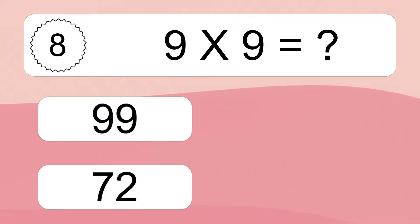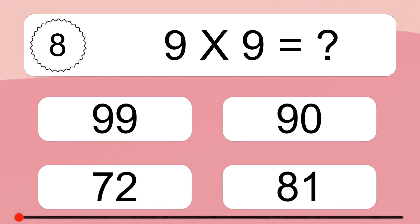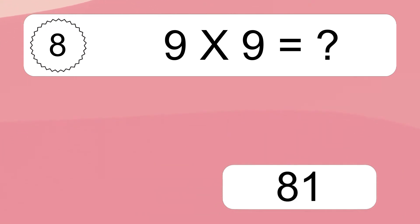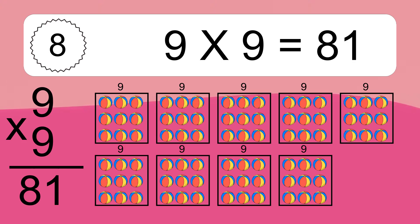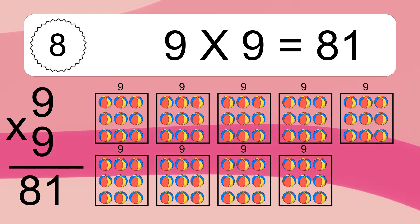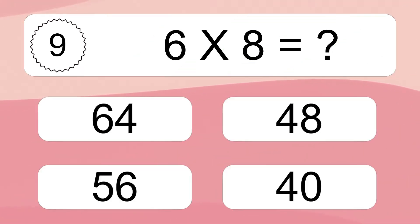9 times 9 equals what? We have 9 boxes, and each box has 9 colorful balls inside. If you count all the balls in all the boxes together, you will have 9 times 9 balls. This equals 81 balls.